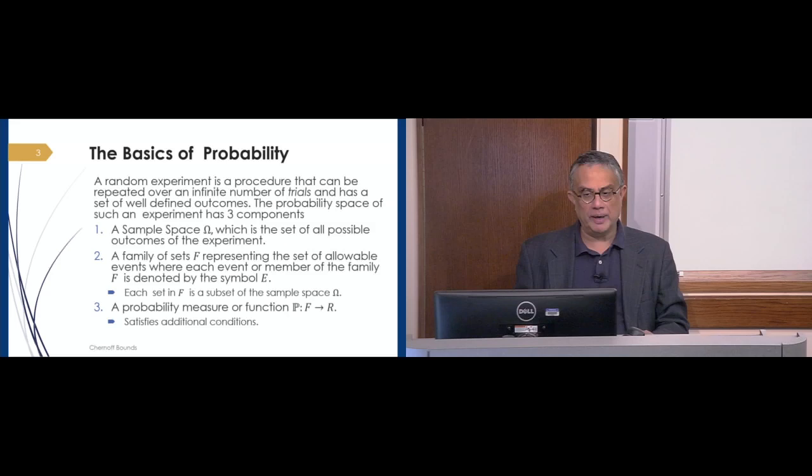Each allowed subset of things that can happen, F, is clearly a subset of all possible things that can happen, Omega. And probability, written using this interesting form of the letter P, is simply a mapping from the allowed events into the real numbers that satisfy some properties.